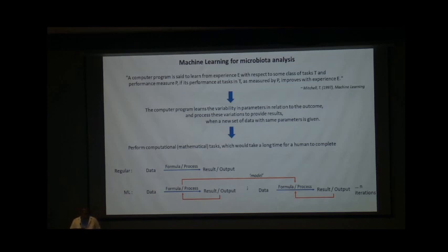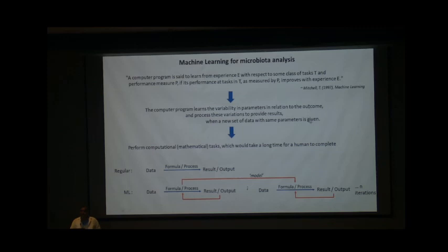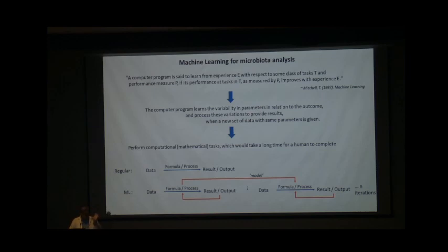Two key things to understand: first, the outcome must be known for machine learning — if you do not know what outcome you're comparing, machine learning goes on infinitely. Second, the same set of parameters must be used — if you change the parameters, whatever machine learning outputs is a result of those different parameters. Overall, machine learning is a computational or mathematical algorithm that analyzes a certain set of data that would otherwise take humans a very long time.